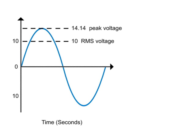Therefore, we can define the AC peak value as 1.414 times 10 volts or 10 RMS which equals 14.14 volts.